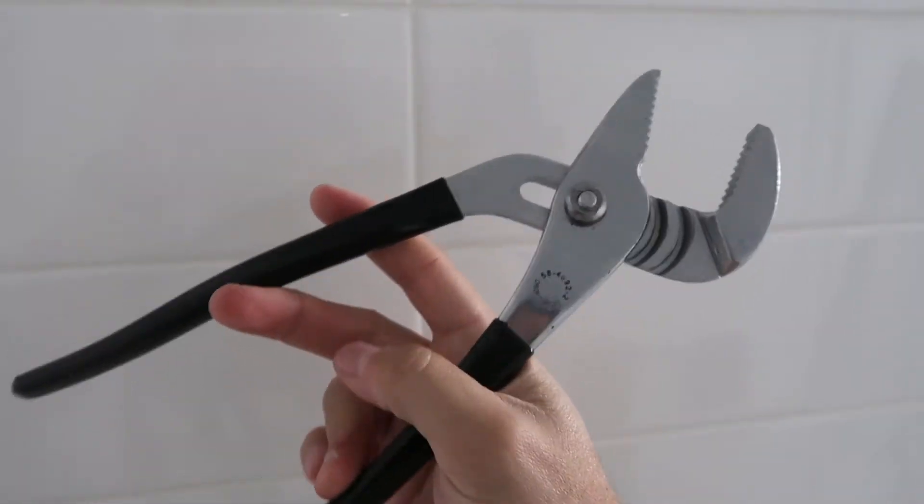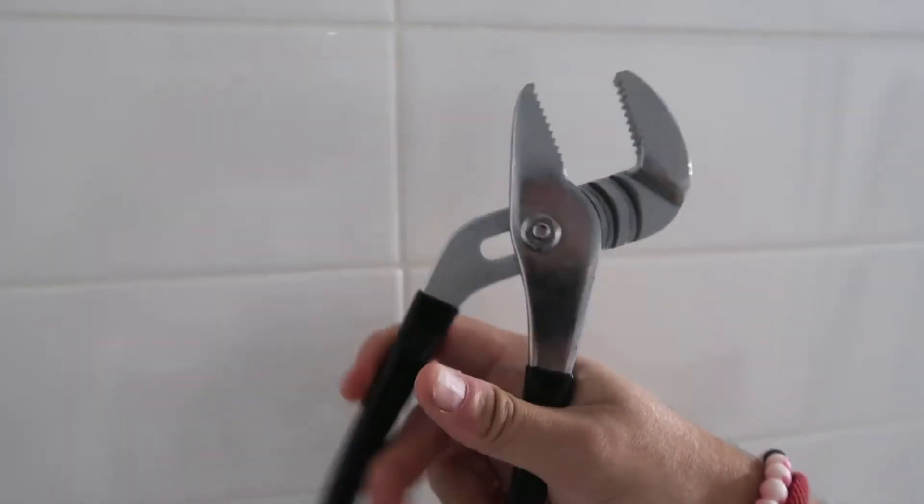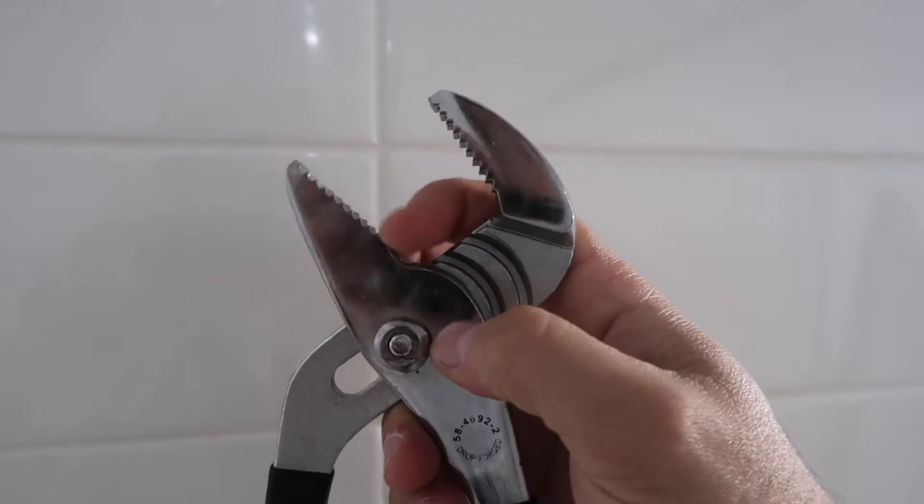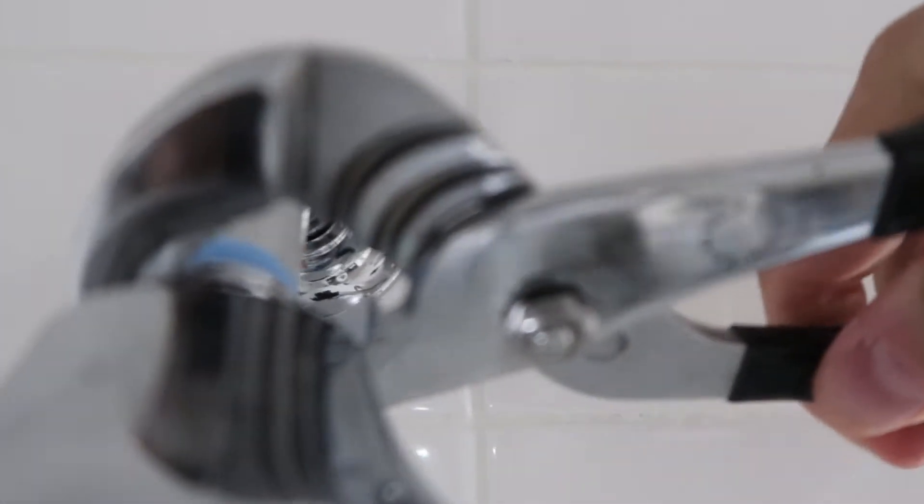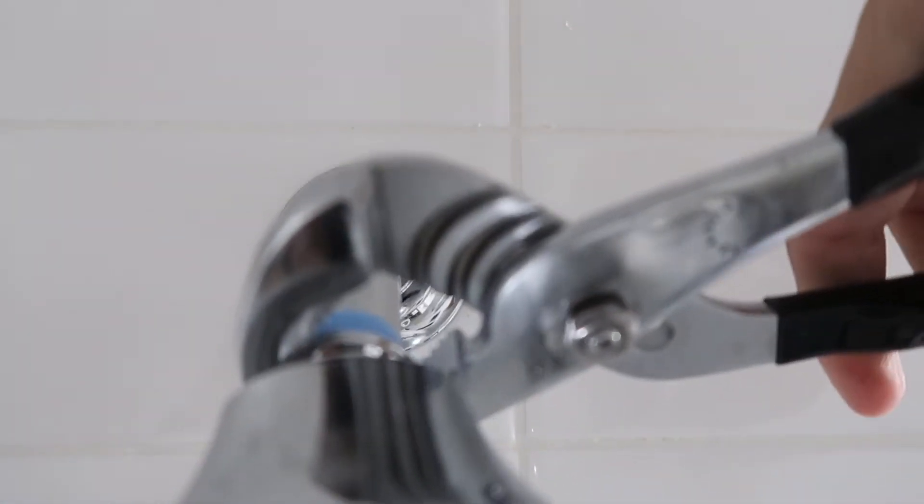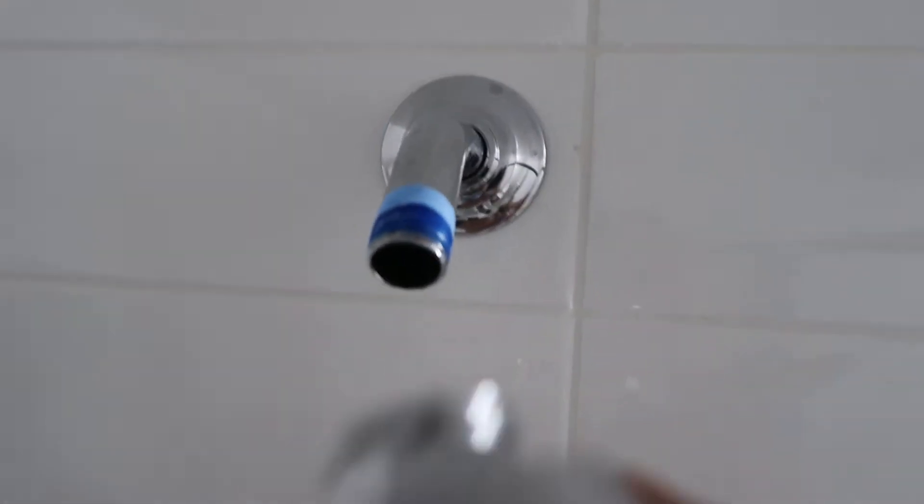You can use any random wrench, but these are specifically made for it. I would put something over these teeth because they tend to scratch the fixture. I don't really care, so right to tighten and left to loosen - that's the trick. Let me untighten this and I'll be right back.